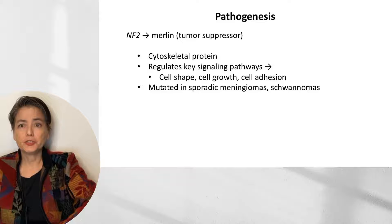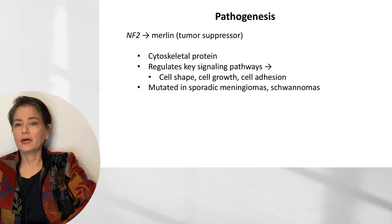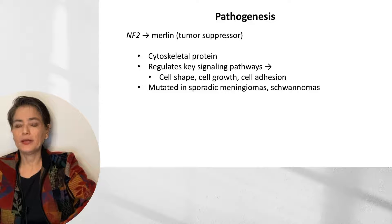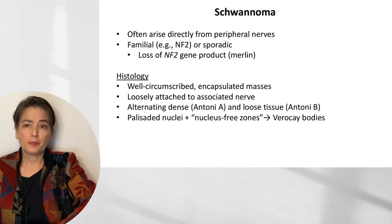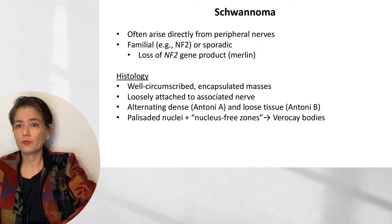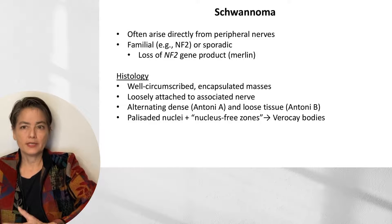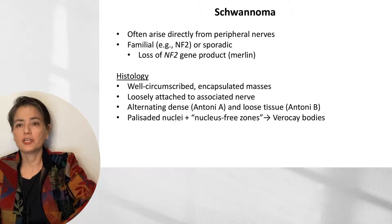Neurofibromatosis type 2 is due to mutations in the NF2 gene, which affects the protein Merlin. Like neurofibromin, Merlin is a tumor suppressor. It is a cytoskeletal protein that regulates key signaling pathways involved in cell shape, growth, and adhesion. Merlin is mutated not only in NF2 but also in sporadic meningiomas and schwannomas. Schwannomas often arise directly from peripheral nerves and may be either familial — for example, in the context of NF2 — or sporadic. In both familial and sporadic schwannomas, we see a loss of function of the NF2 protein Merlin.